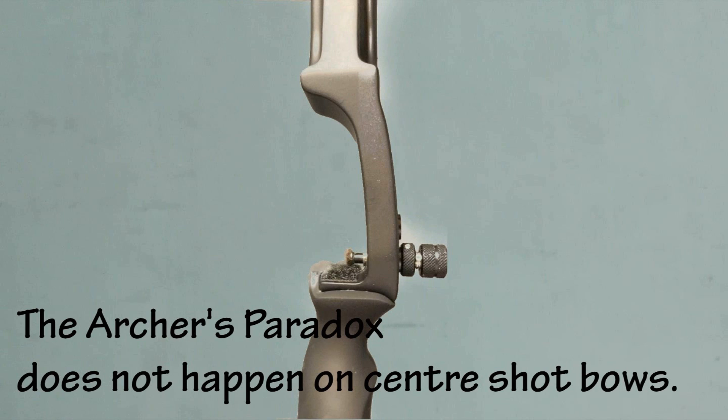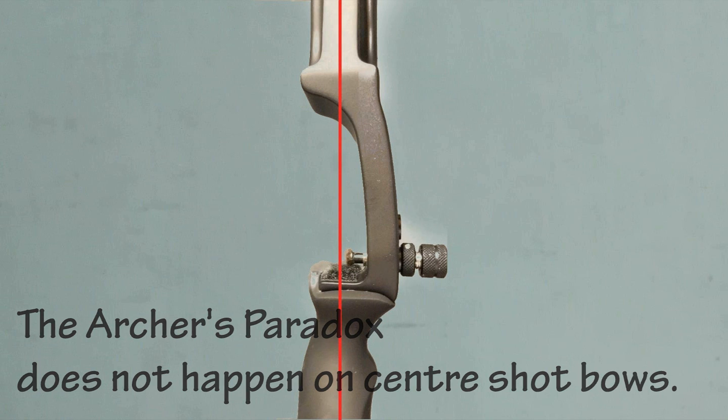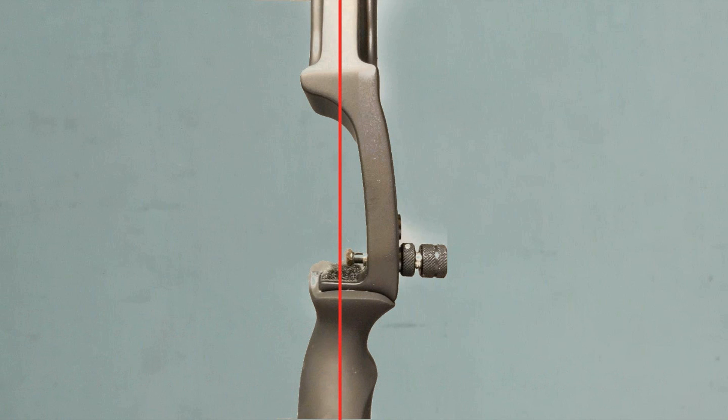Now let's get into the topic. The Archer's Paradox does not happen on center shot bows, which are the bows that are cut past the center because you can point your arrow directly towards your target.